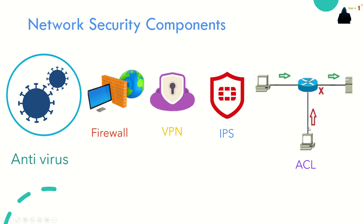For example, using ACL you can allow one computer to connect to a server while blocking another computer from communicating with that server. IPS is used to identify fast-spreading threats such as zero-day or zero-hour attacks. VPN is a tunnel that secures access to remote workers and remote offices — for example, two offices in London and Tokyo can communicate securely over the public network.